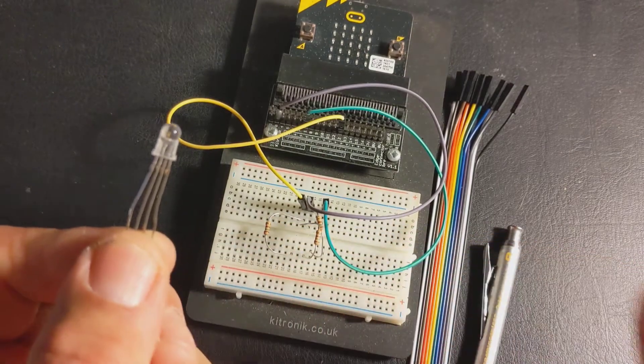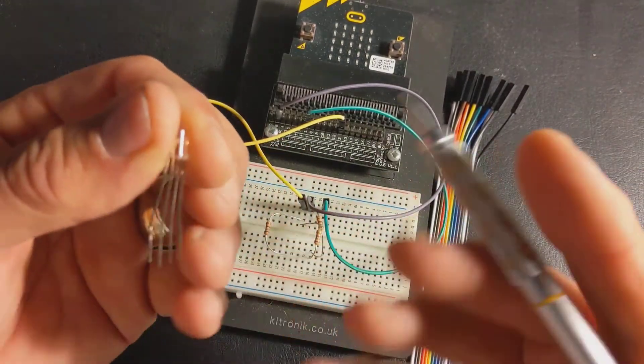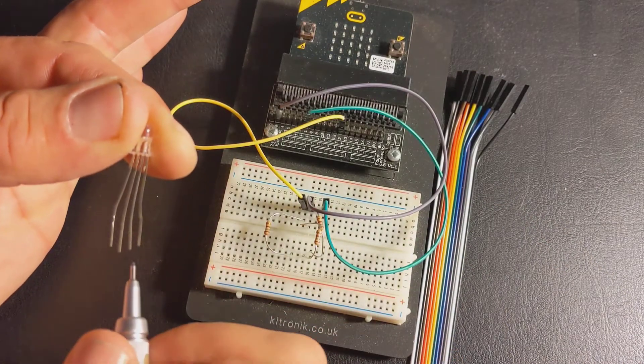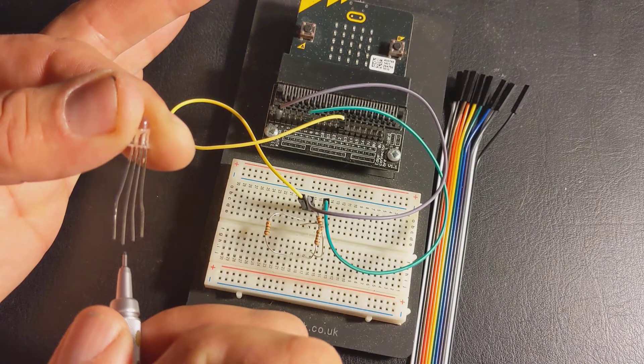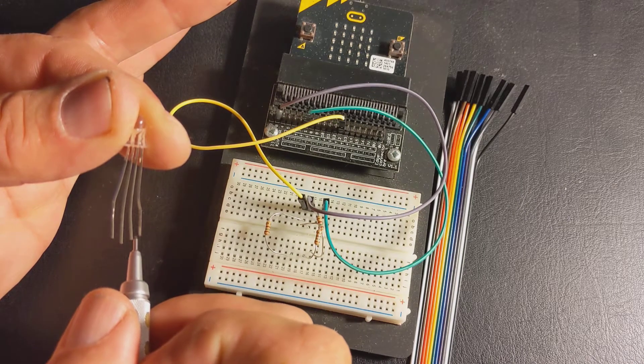So most LEDs have got two legs, an anode and a cathode, a plus and a minus. And you can tell them apart because one's longer than the other. This one has got a cathode, which is the long leg. And then it's got channels that it uses for red, green, and blue.